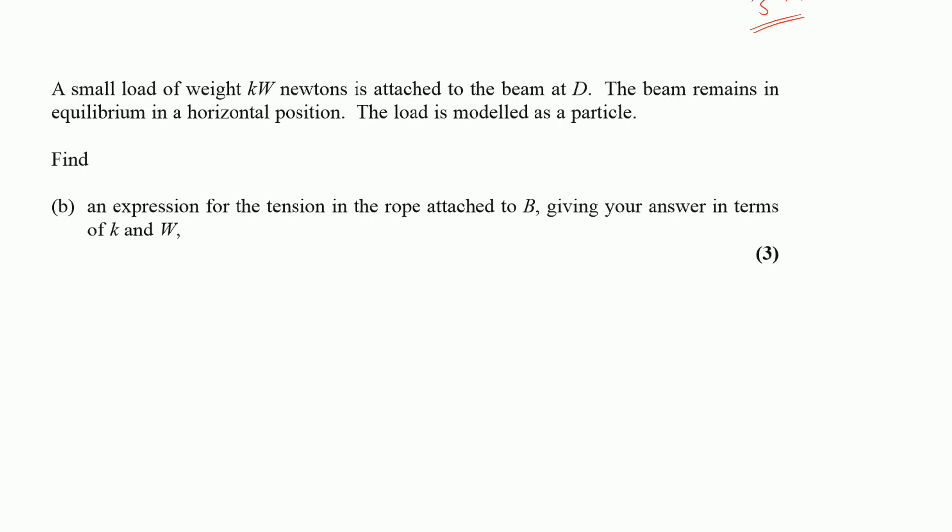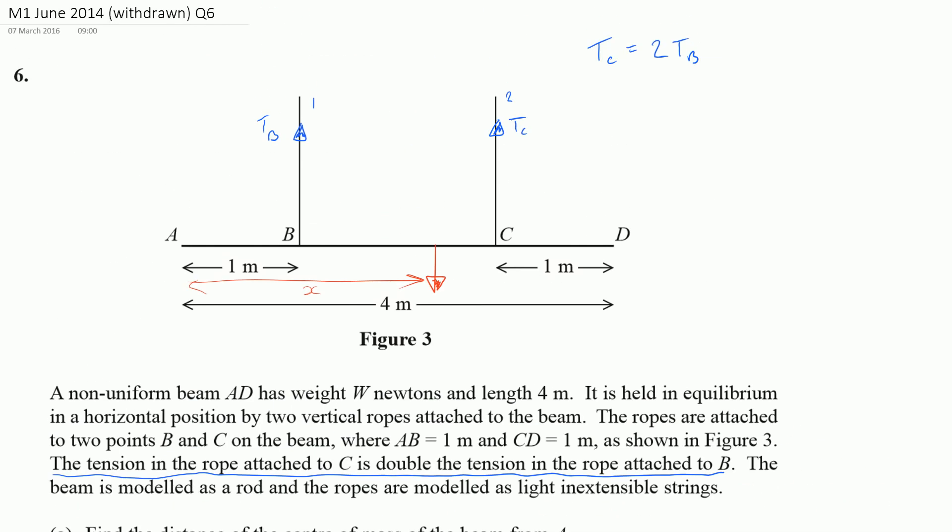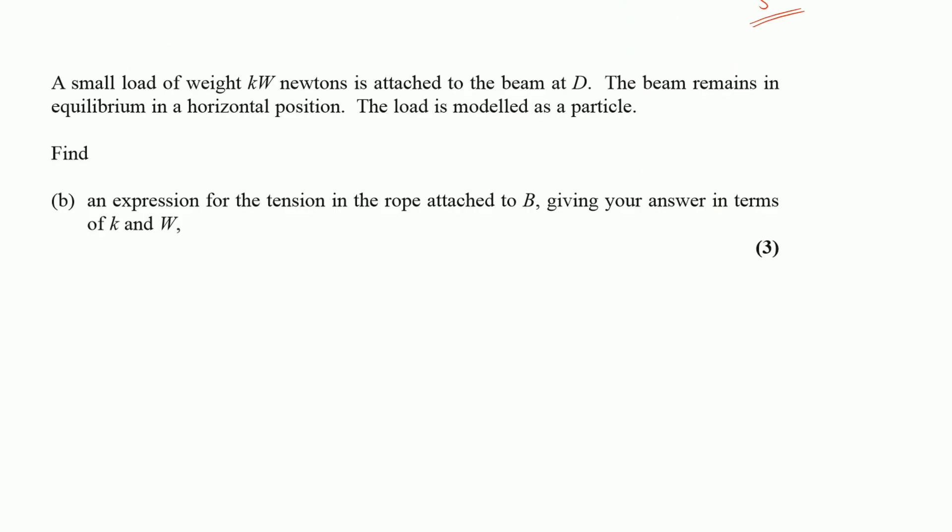So how would that change our problem? We want to find an expression for the tension in the rope at B and give our answer in terms of K and W. So let's go back to our picture. We're going to add a mass at D, which is K times W. And now what I'm interested in is just finding out the tension at B. I'm not interested at all in the tension at C. Now that tells me something important, it tells me that the easiest thing to do in this question would be to take moments about C. Because if I take moments at C, then I'm not going to get this included in my calculation.